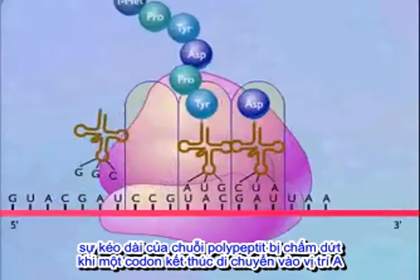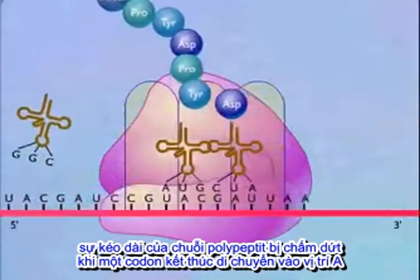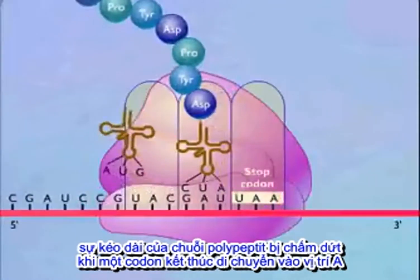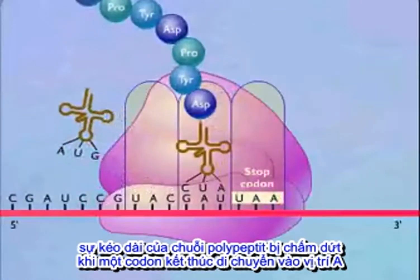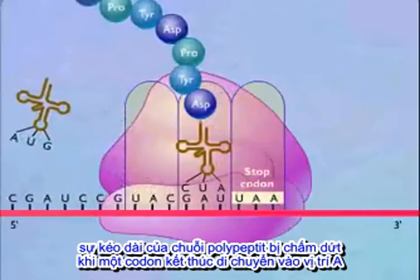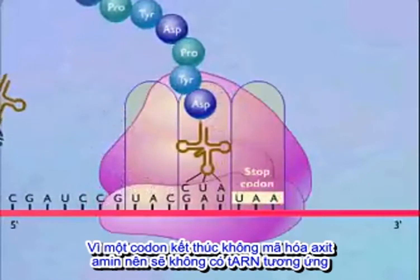Elongation of the polypeptide is terminated when a stop codon moves into the A-site. A stop codon does not specify an amino acid, and does not have a corresponding transfer RNA.